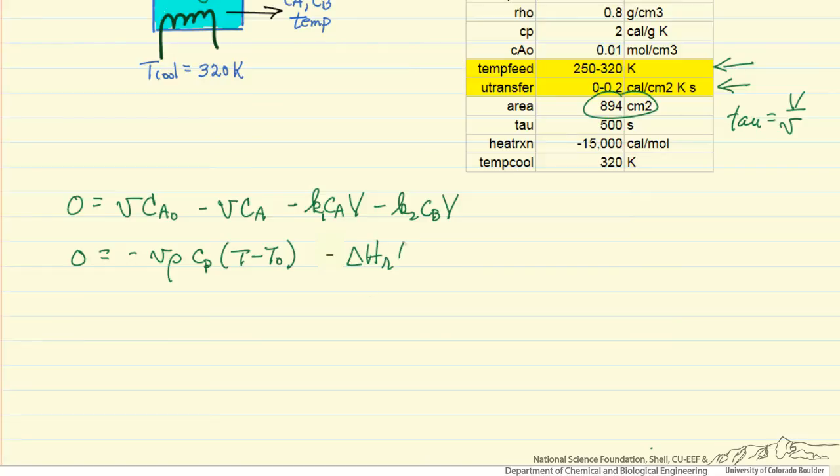Now the heat of reaction per mole times the molar flow rate leaving the reactor of the product. So the concentration B at the exit times the volumetric flow rate is the molar flow rate. And then the term for heat transfer coefficient and heat transfer area, and reactor temperature minus the cooling temperature.